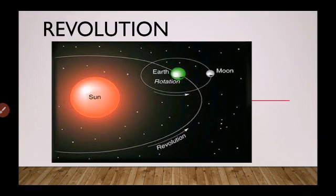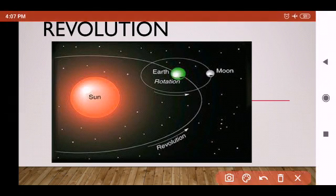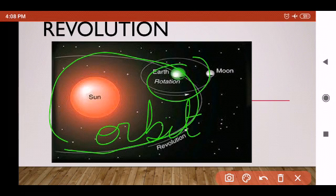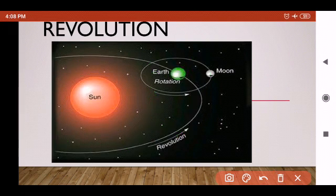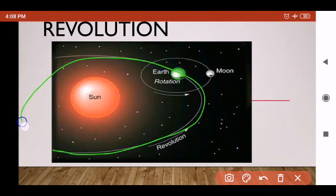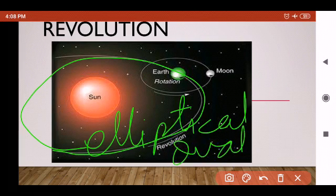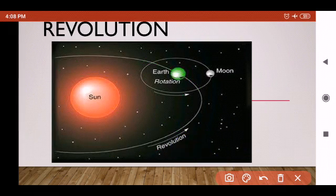Now we will study about the revolution of the Earth. While rotating on its axis, the Earth also moves around the Sun in a fixed path, and this fixed path is called orbit. This orbit is elliptical in shape — elliptical means it is oval in shape.